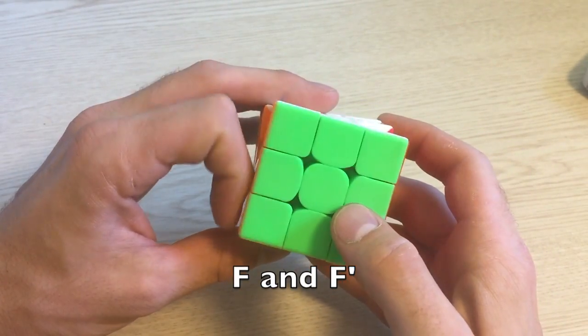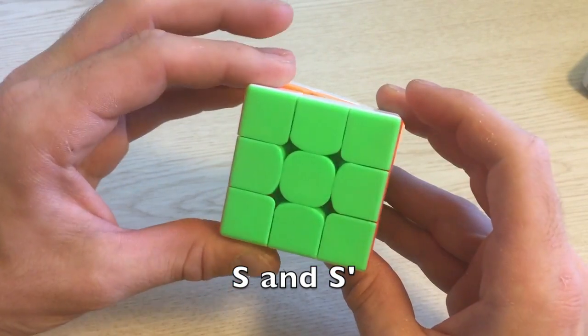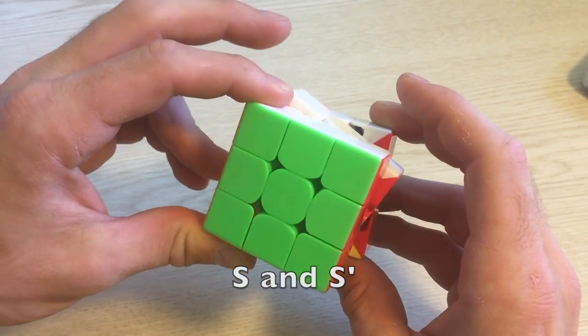Lastly we have S for the side of the cube, and it moves the same as the front face. F and F' look like S and S'. There is also notation for rotating the entire cube around.